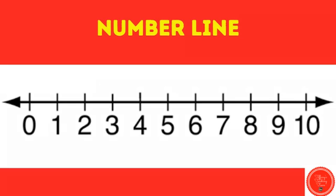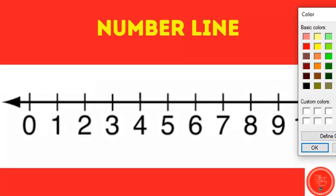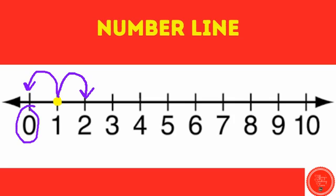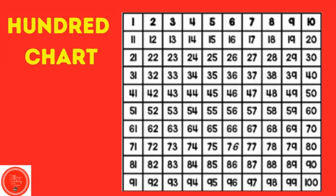Can you find the number one on this number line? Good job. The number one is here. What number comes before the number one? Before means we're going to jump this way. That would be zero. What number comes after the number one? Two. Here's our hundred chart. One is easy to find. It's the very first number right here. Number one.